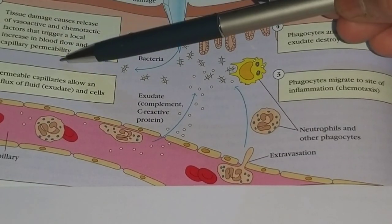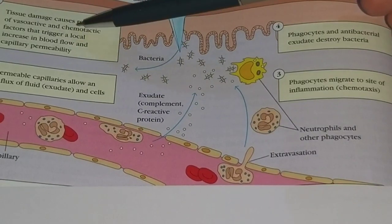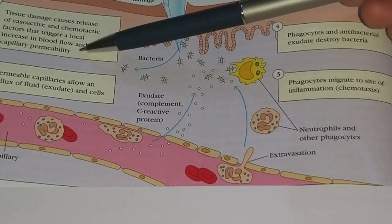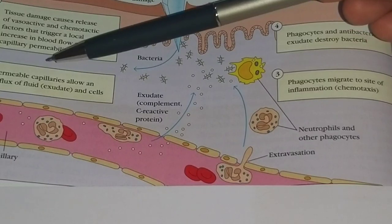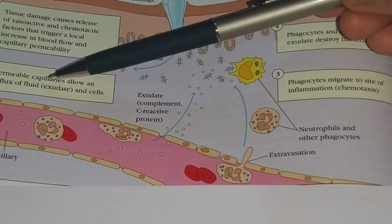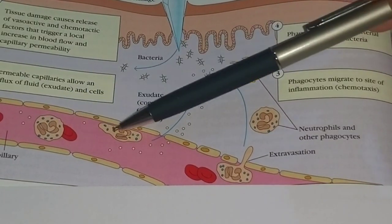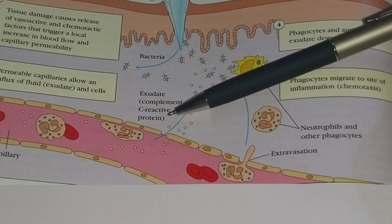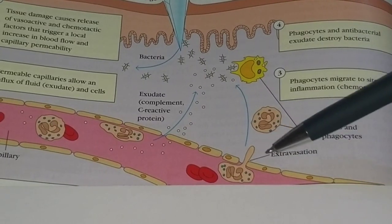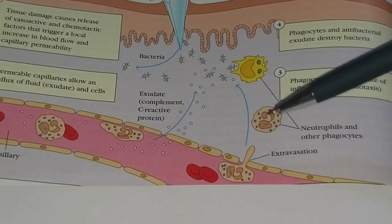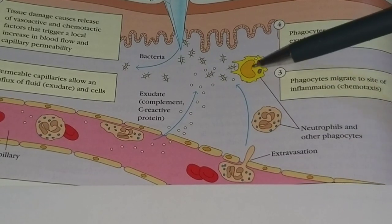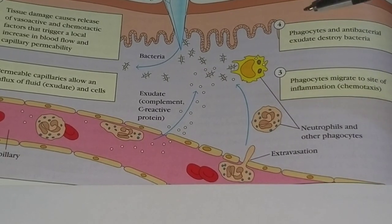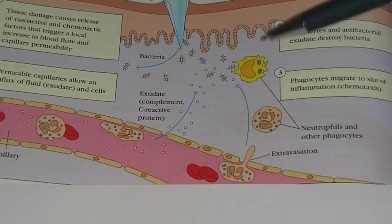Here, step by step the process is summarized. First, tissue damage causes release of vasoactive and chemotactic factors that trigger a local increase in blood flow and capillary permeability. Second, permeable capillaries allow an influx of fluid — exudates — and cells. Exudates containing complement and C-reactive proteins come out. Then extravasation takes place, after which neutrophils and other phagocytes migrate to the site of inflammation — a process known as chemotaxis — and phagocytose the antigens or bacterial cells.